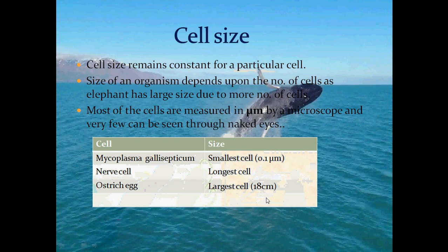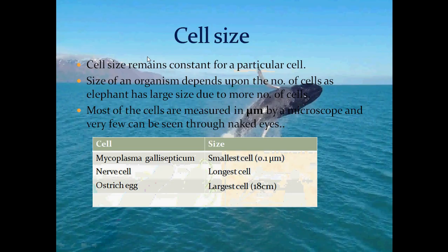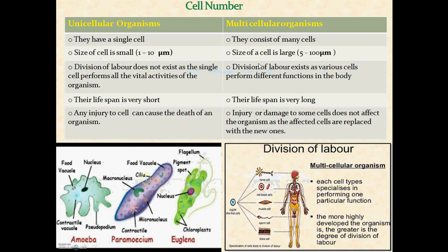Now let's discuss the difference between unicellular and multicellular organisms. Unicellular organisms have a single cell, whereas multicellular organisms consist of many cells. The size of unicellular organisms is 1 to 10 micrometers, while multicellular organism cells vary between 5 to 100 micrometers. In unicellular organisms, division of labor does not exist — a single cell performs all vital activities — whereas in multicellular organisms, different functions are performed by different cells.